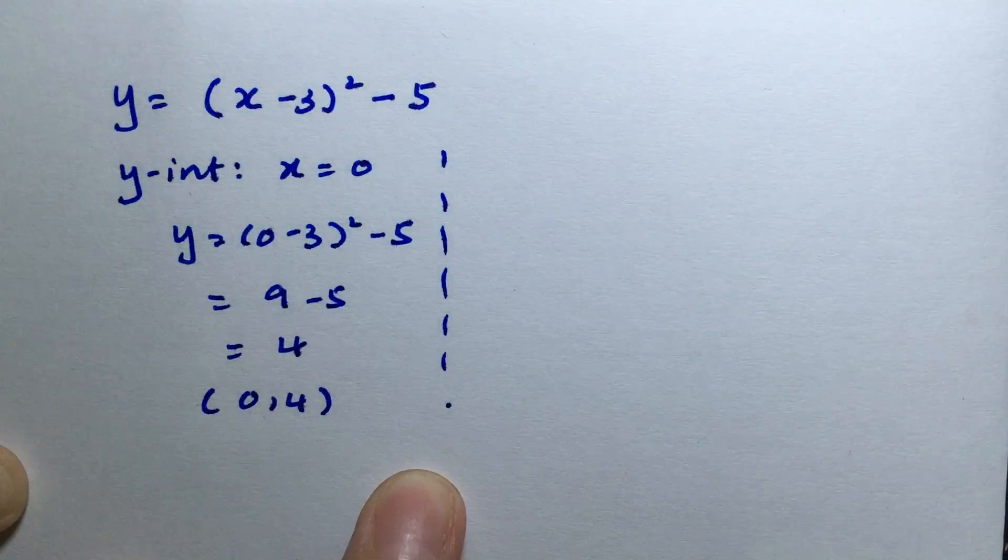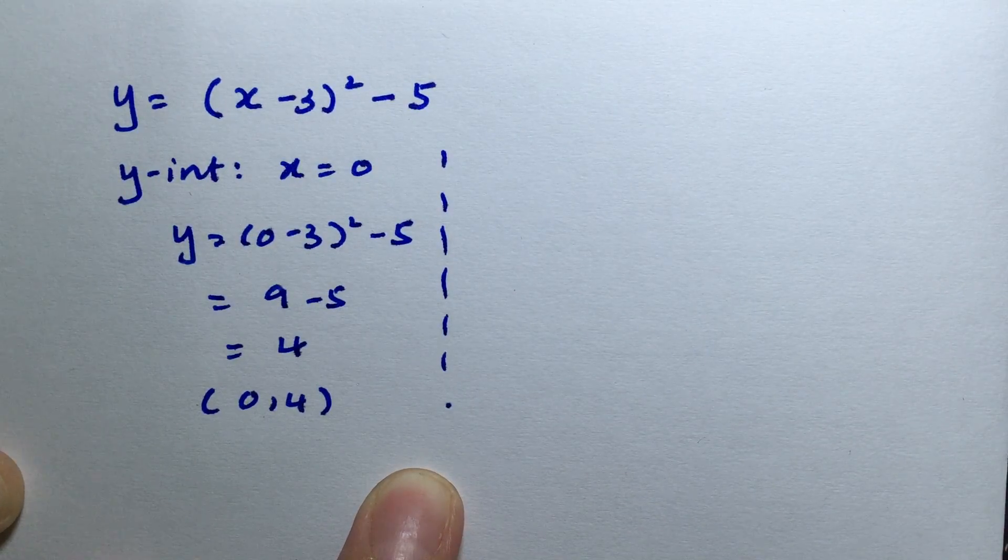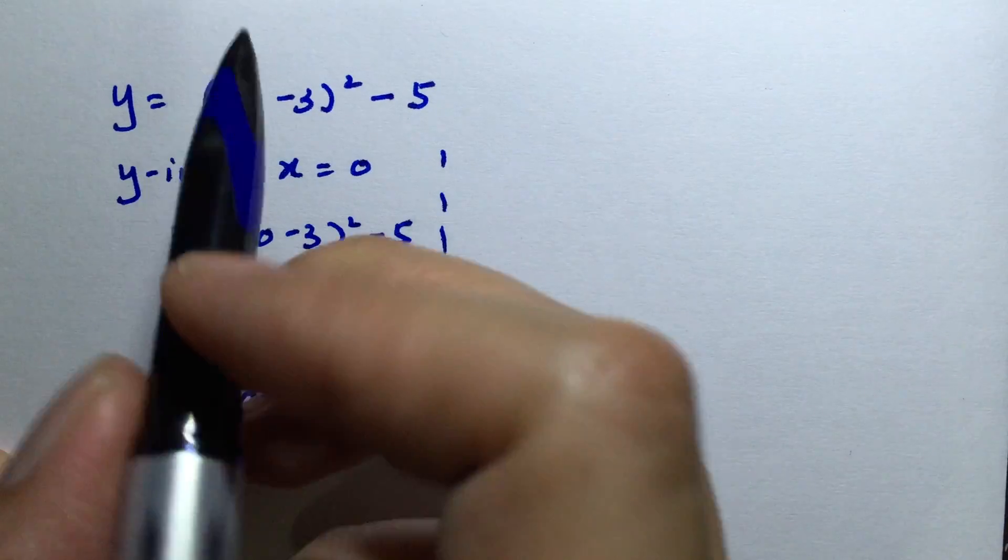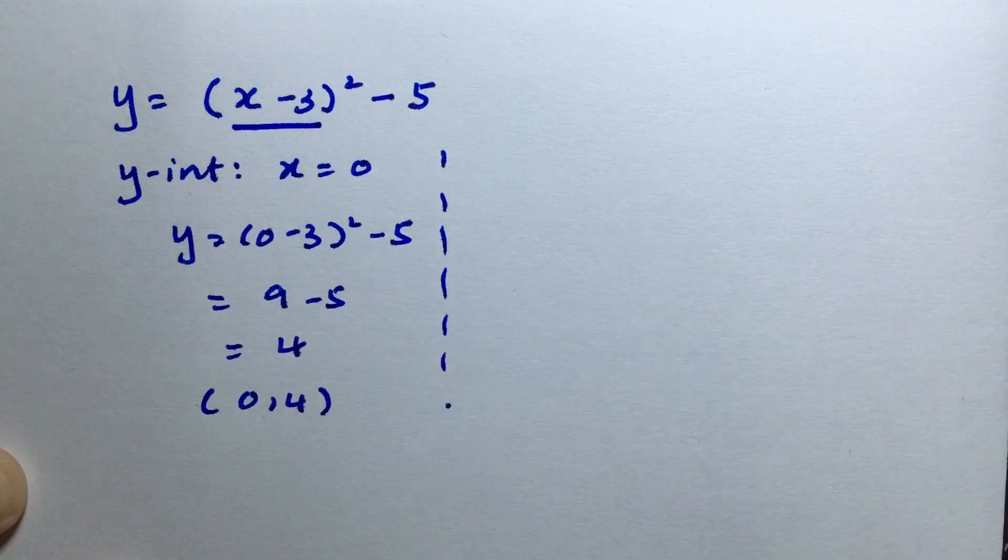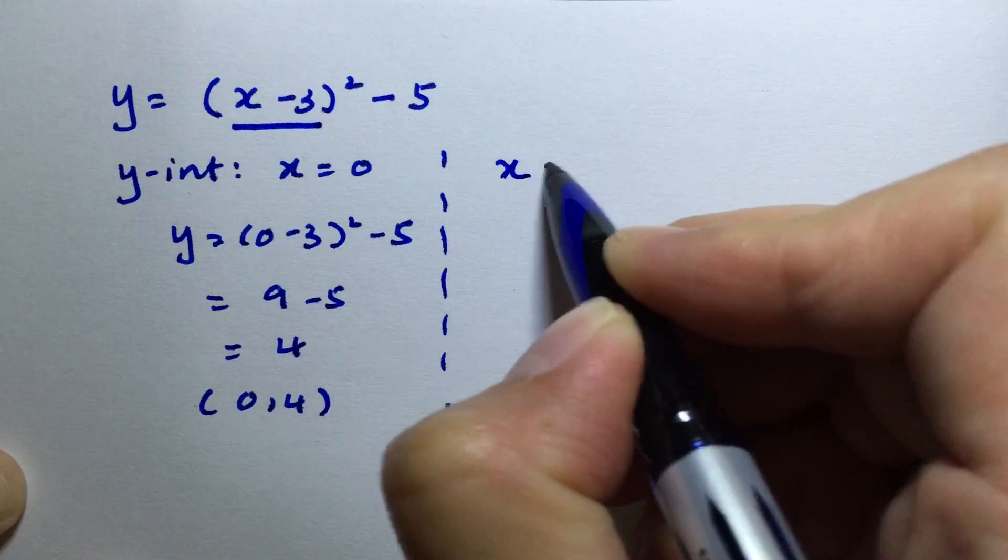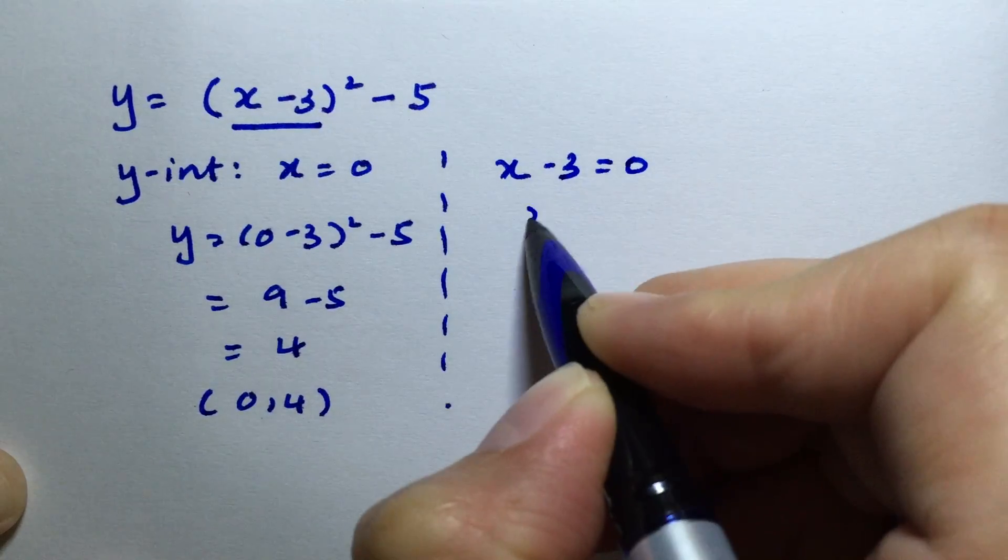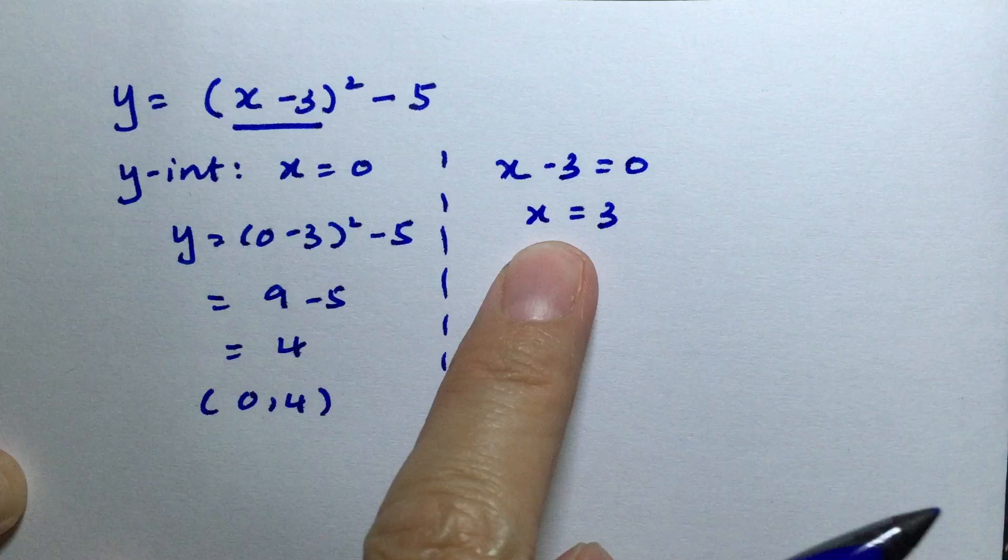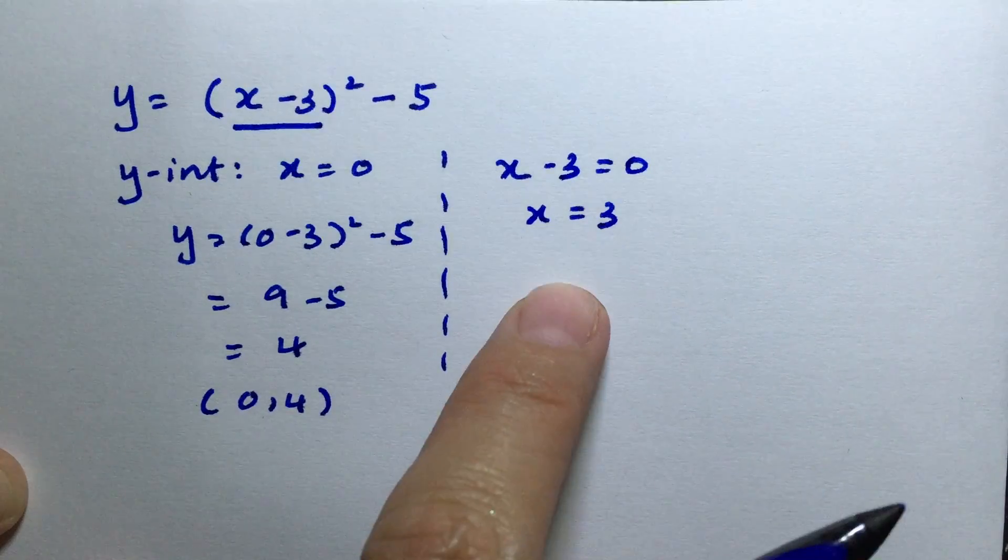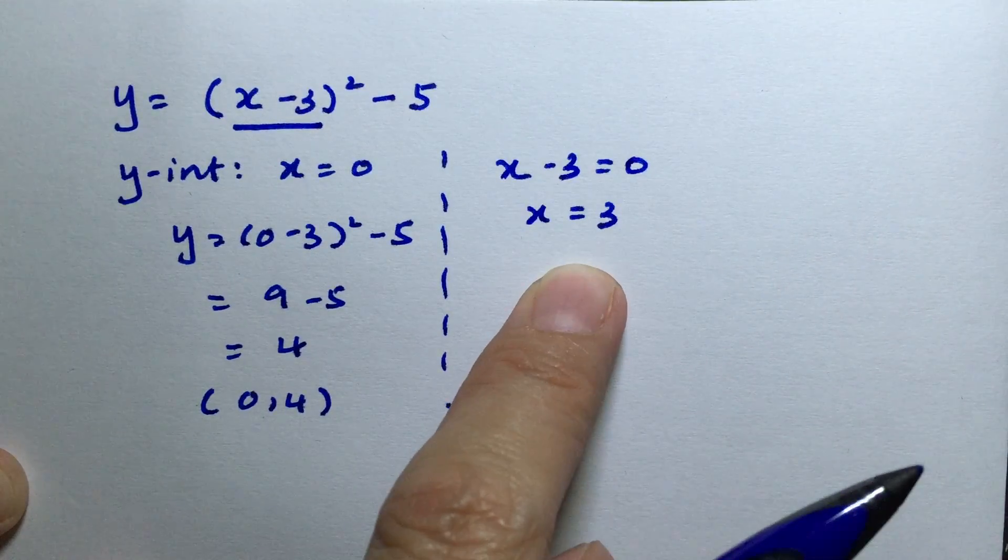The other point we need is the turning point. To get the x-value, use whatever is within the bracket and set it to 0. In this case, x = 3, which is also the line of symmetry.